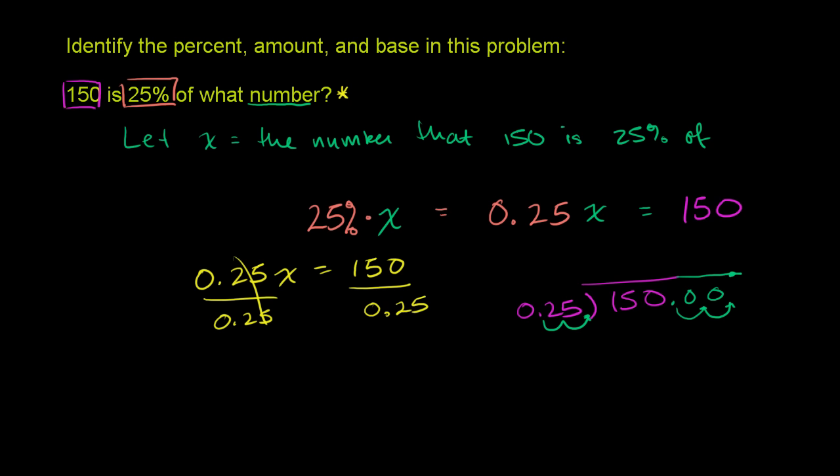And let's just work it out really fast. So 25 doesn't go into 1, doesn't go into 15. It goes into 150, what is that, 6 times, right? It goes into 104 times, so it goes into 150 6 times. 6 times 0.25 is, or actually, this is now a 25. We've shifted the decimal. The decimal's sitting right over there. So 6 times 25 is 150.